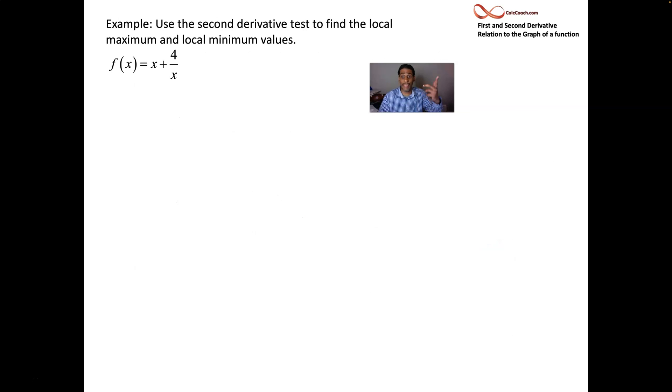Let's look at an example: f(x) = x + 4/x. Drama at zero. Let's take the derivative. So f'(x) = 1 - 4/x². That's the derivative. Where would that be equal to zero?